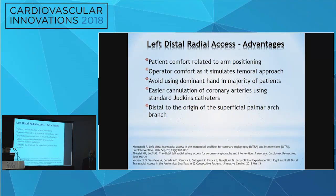In addition to the routine advantages that radial access has over femoral access, distal radial access also provides a more comfortable position for the patient, and is more comfortable for the operator, who is able to stand on the right side. We are able to avoid using the dominant right hand for most patients. It also allows easier coronary cannulation using standard catheters. Theoretically, there is also less risk of ischemia or bleeding because the puncture site is more distal to the origin of the superficial palmar branches, which provides more circulation to the hand.